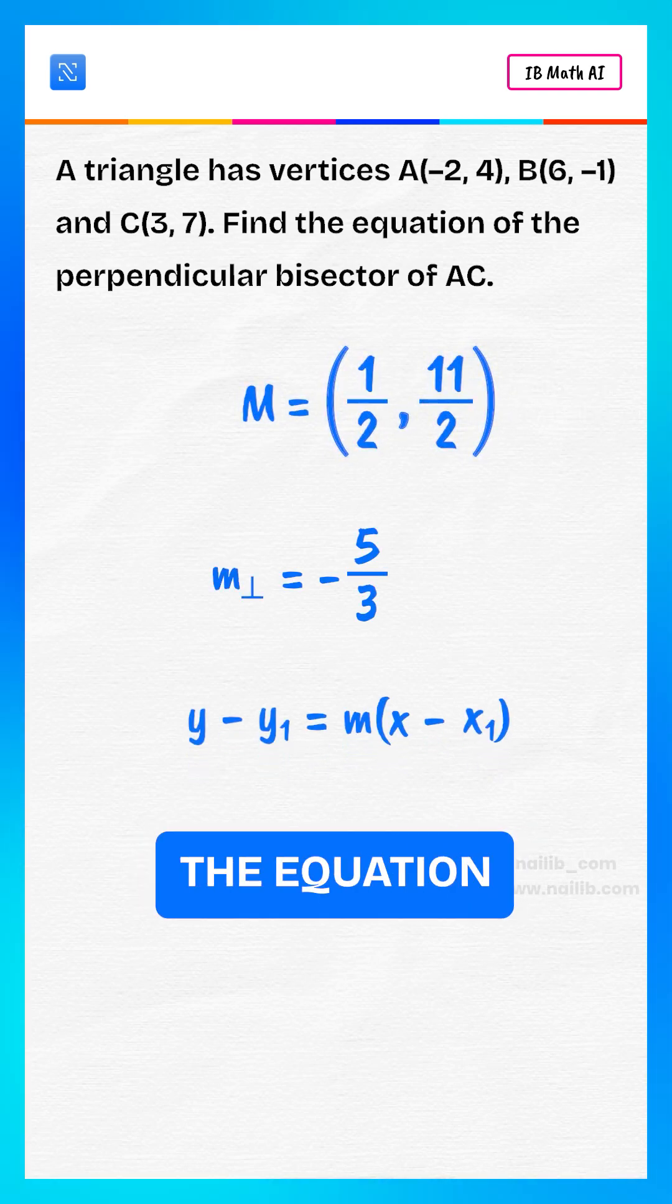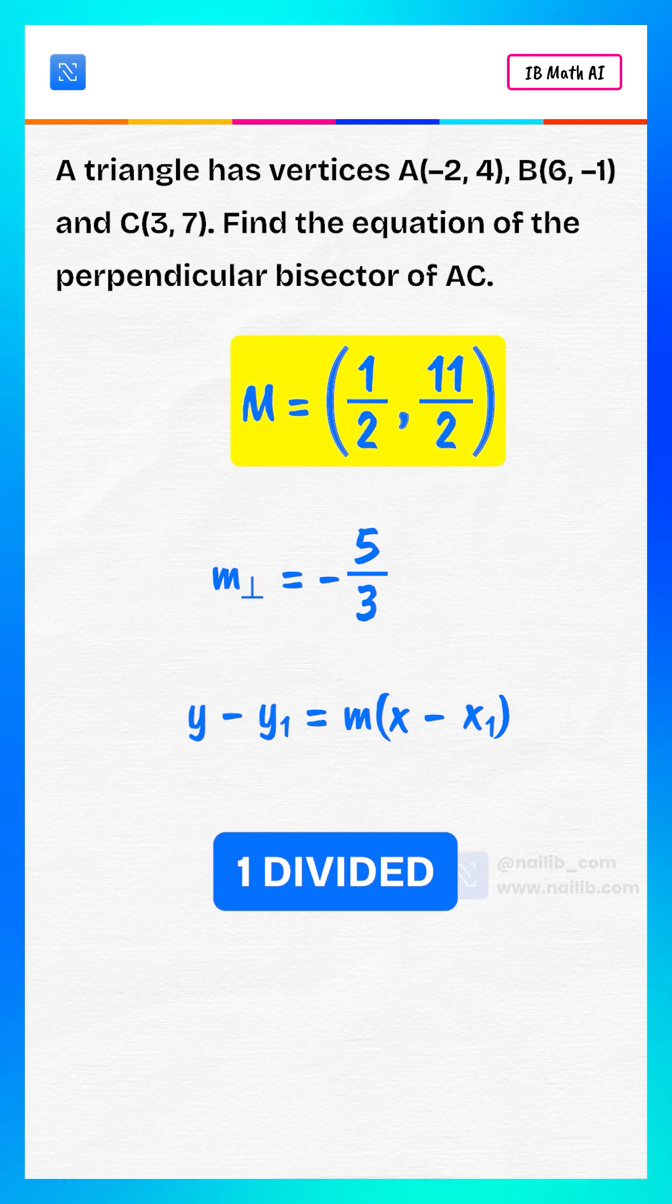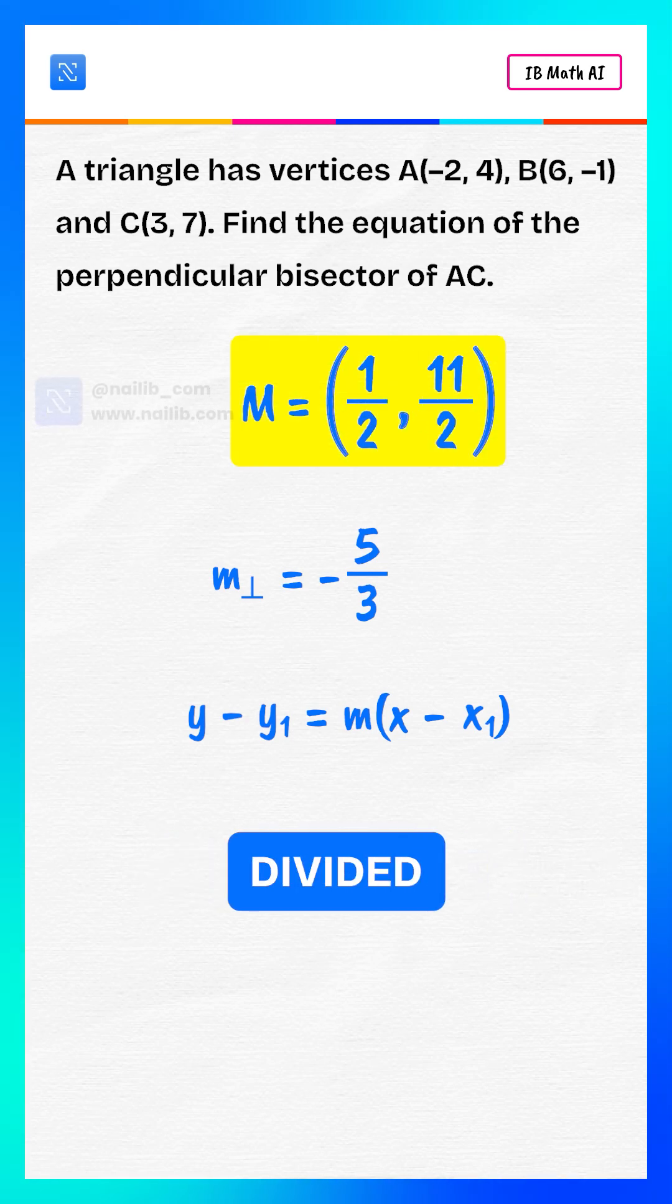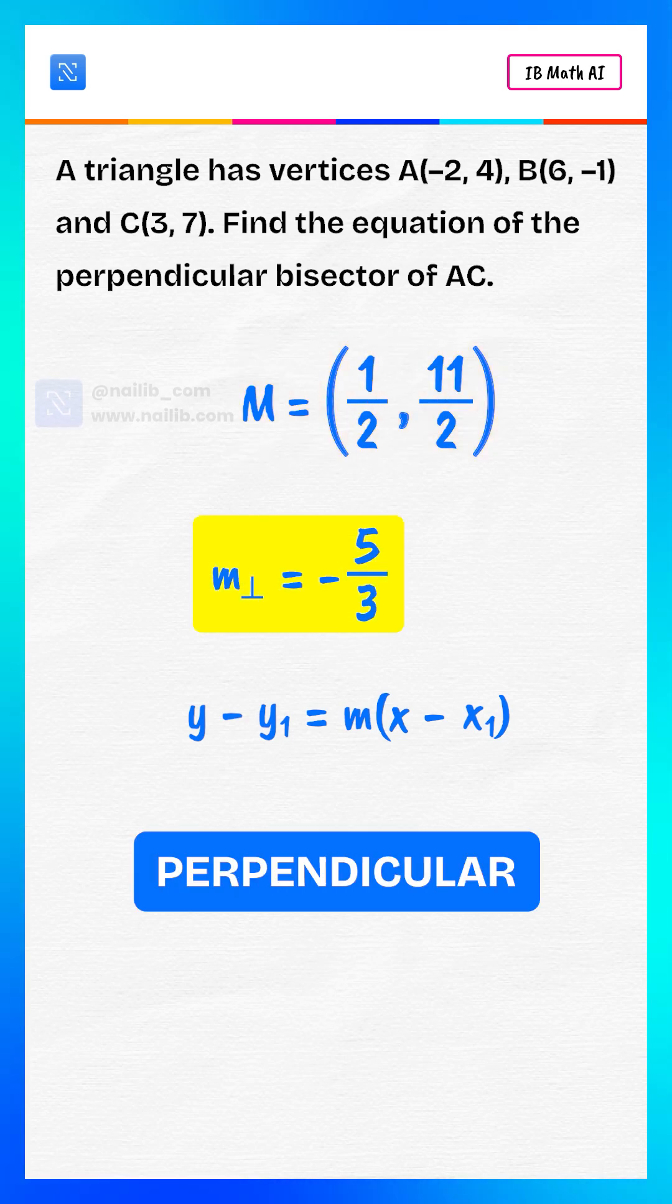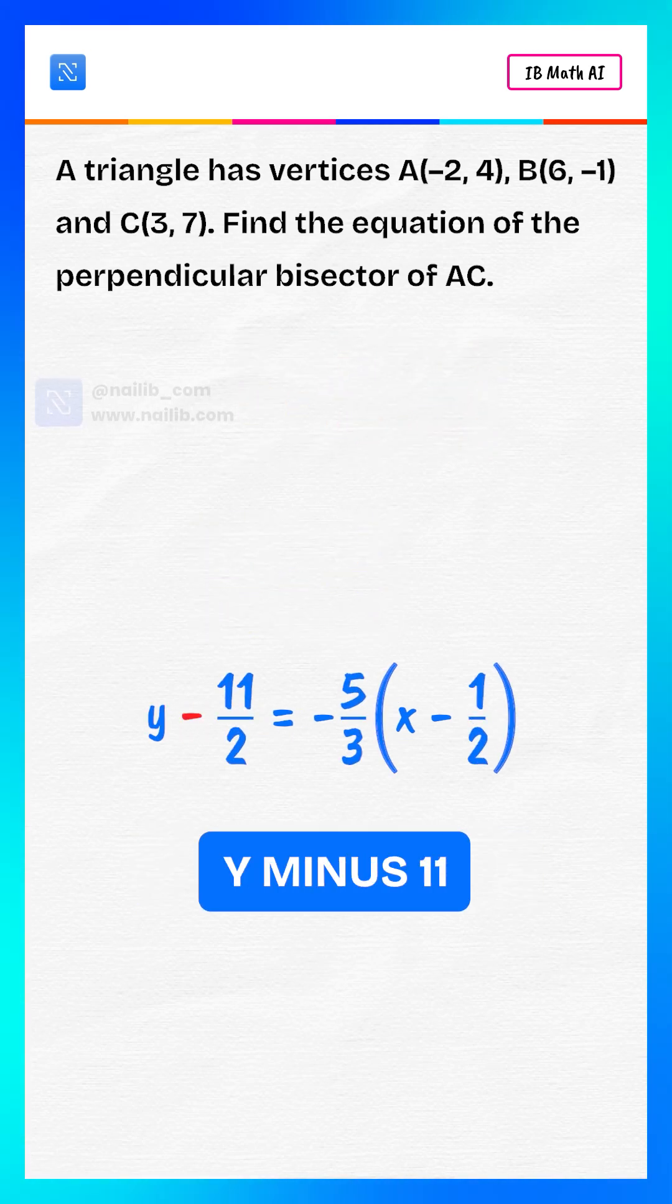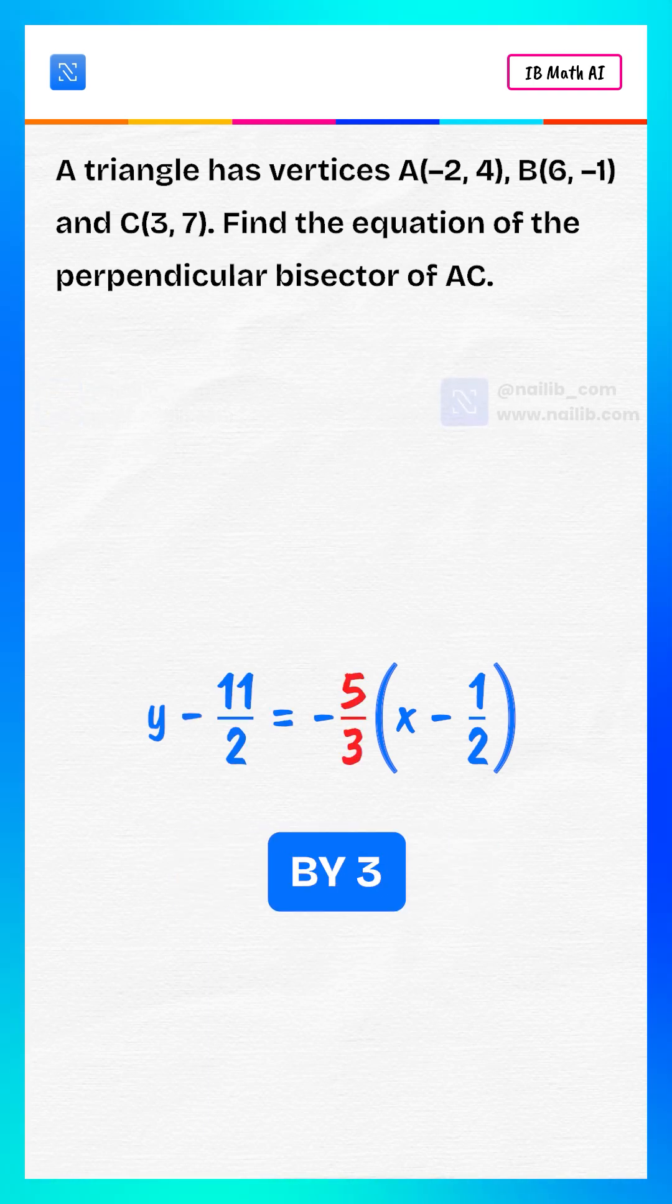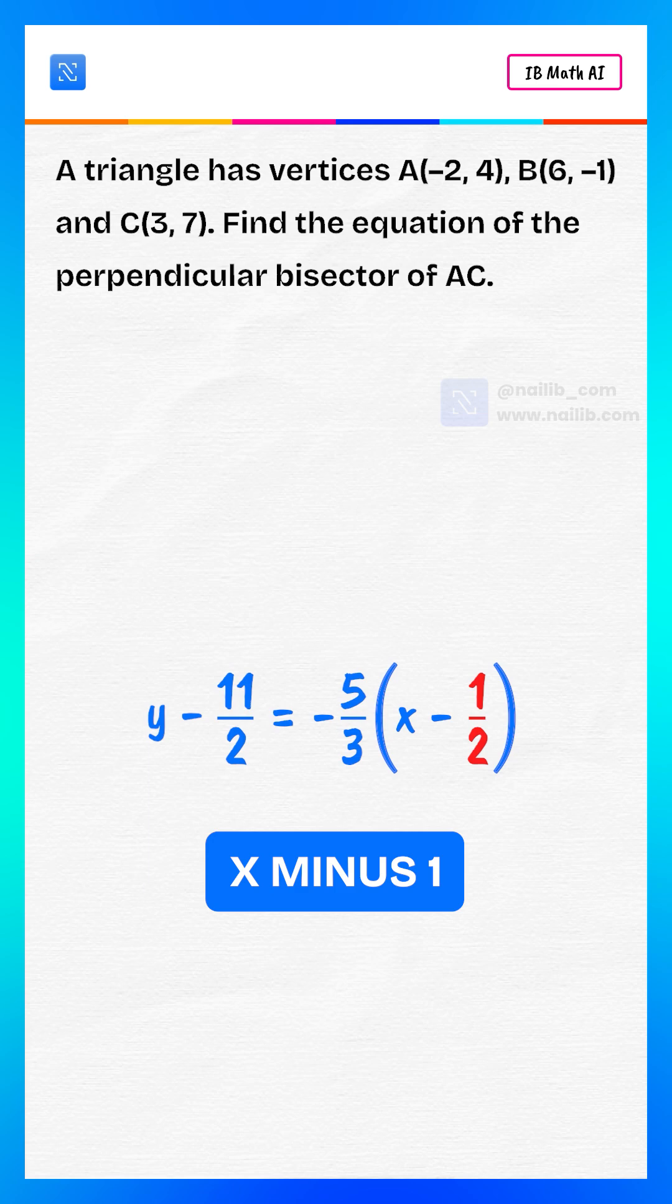Now we find the equation using the point-slope method. Use midpoint (1/2, 11/2) with perpendicular slope -5/3. We write: y - 11/2 = -5/3(x - 1/2).